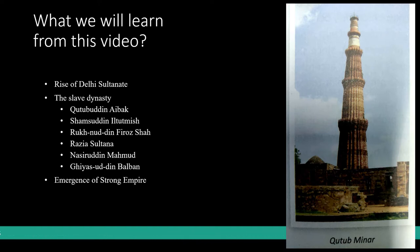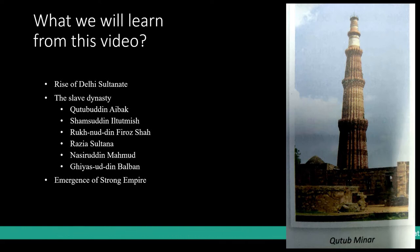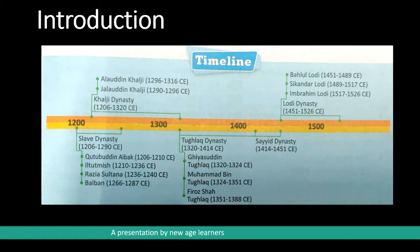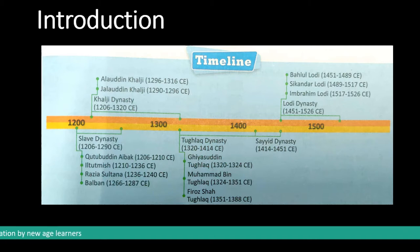What we will be reading about today is the rise of Delhi Sultanate and the slave dynasty. The period of Delhi Sultanate is an important period in the history of India. This period begins in the later medieval period from 1206 CE to 1526 CE. Five dynasties ruled during this period.